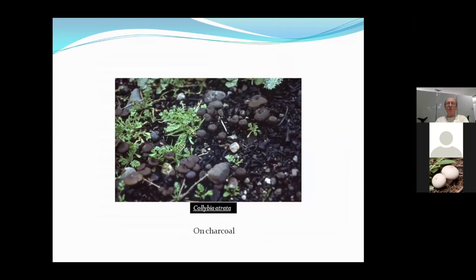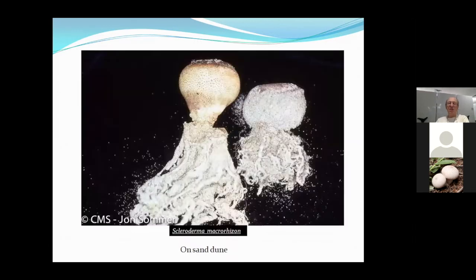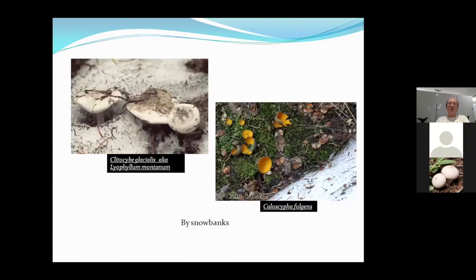It's really important to note the habitat and substrate: are you in a forest, is it growing on wood, on the ground, or on another mushroom? One interesting habitat is sand dunes — Scleroderma macrorhizon, a puffball, grows in sand dunes on the west coast. There's also a whole group that grows along melting snowbanks, like Clitocybe glacialis and Caloscypha fulgens, photographed around 11,000 feet in the Caribou area above Nederland.